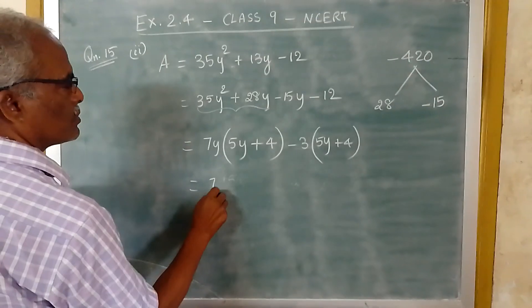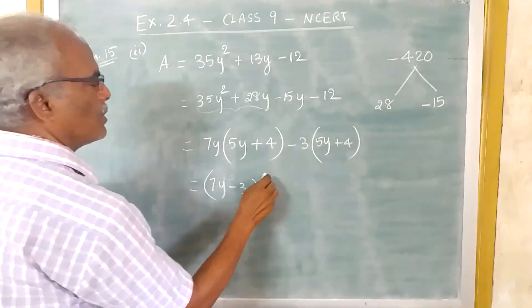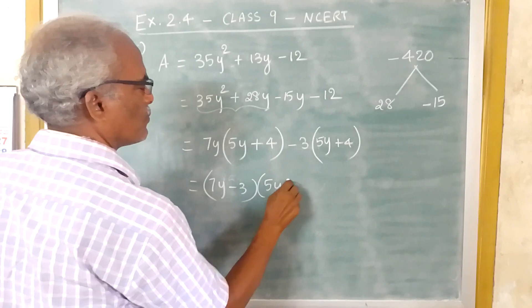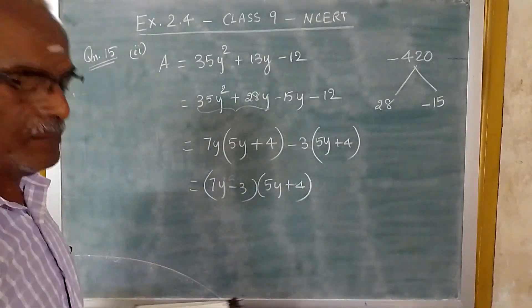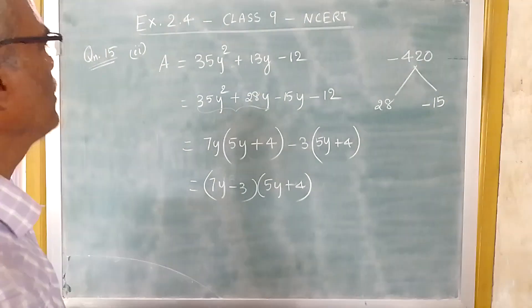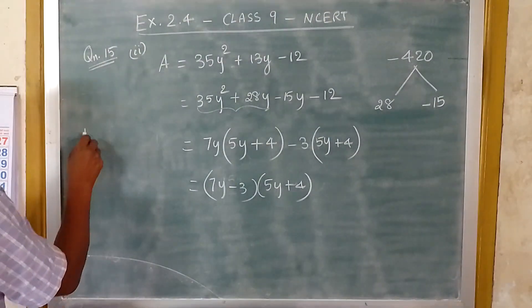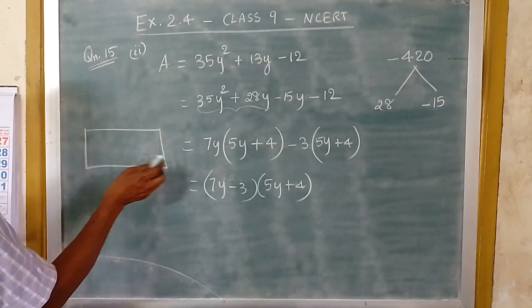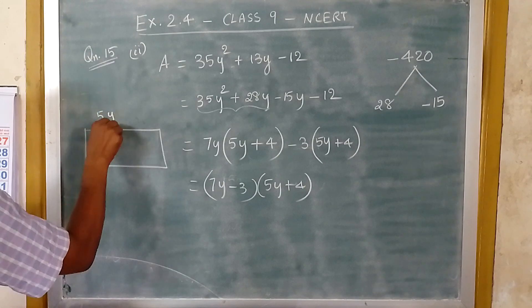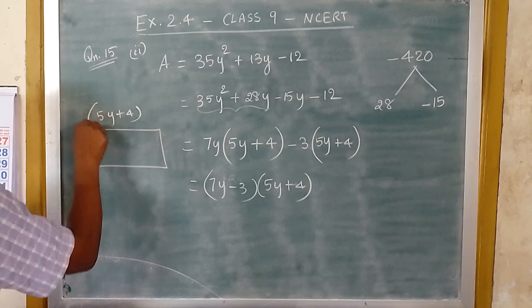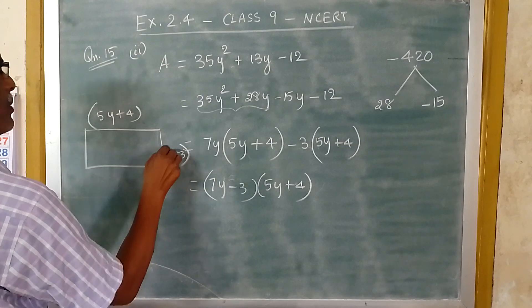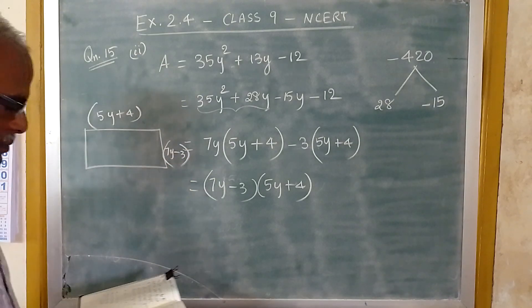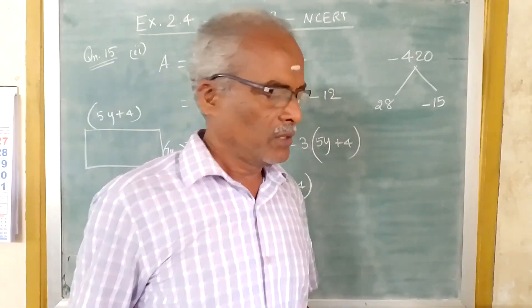Therefore 7Y minus 3 into 5Y plus 4 are the factors for this area. So 5Y plus 4 can be the length, and 7Y minus 3 can be the breadth.